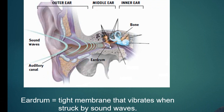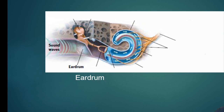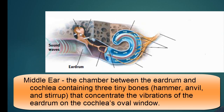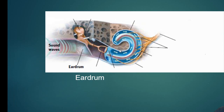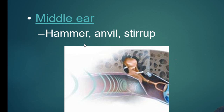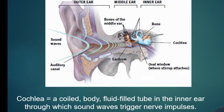The eardrum is just a membrane and it vibrates — sound waves cause the energy to make it vibrate. It's connected to some bones on the other side of the eardrum: the anvil, the hammer, and the stirrup. One of them is connected to a fluid-filled sack, and this is the middle ear.